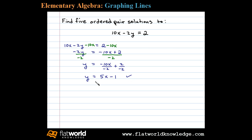Now that we've solved for y, we'll use this to determine five ordered pair solutions. In this form we can see y depends on x. X is the independent variable, so we'll choose any values for x, substitute them in, and find the corresponding values for y.